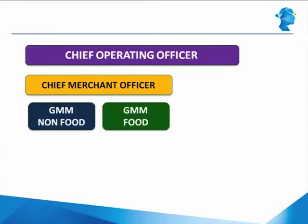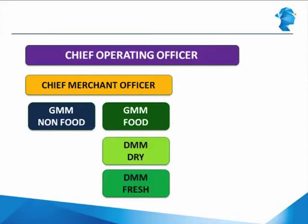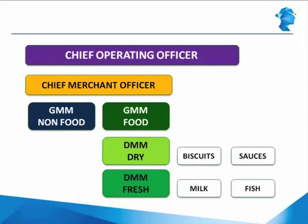A chief merchandising officer would typically have a few general merchandising managers handling different divisions of the retailer's assortment. For example, the retailer has divided his assortment into food and non-food categories with two GMMs. These GMMs have divisional merchandising managers handling subdivisions — such as a DMM for dry food covering biscuits and sauces, and a DMM for fresh food covering perishables like milk and fish. Each of these categories is handled by a buyer or a set of buyers.